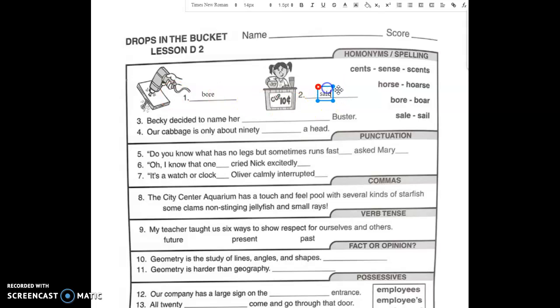That word is a homophone. This one S-A-I-L means like to sail a boat. Number three, Becky decided to change her, Becky decided to name her blank buster. Well, we've already used bore and sail, so it's going to have to be horse.